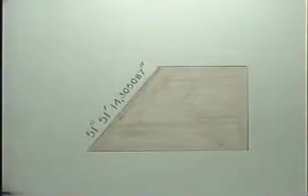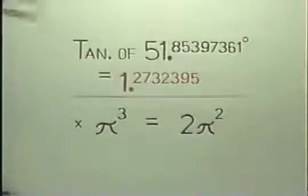To date, no one has any answers, except their own. It's the price we pay for believing that the builders were ignorant. 51 degrees, 51 minutes, and 14.305 seconds can also be expressed as 51.85397361 degrees. In this, its decimal mode, it has a tangent. And this tangent is a mathematical ratio, that which separates the cube of pi from the square of double pi.